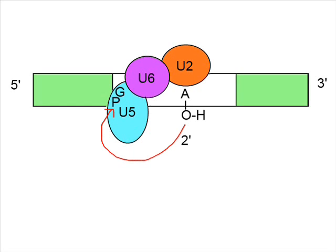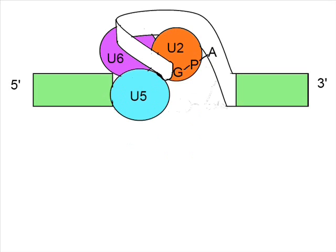U2 initiates the first transesterification reaction. In this reaction, the 2' hydroxyl group of the base pair adenine attacks the 5' phosphate of the 5' intron, forming a lariat intermediate and freeing the upstream exon.